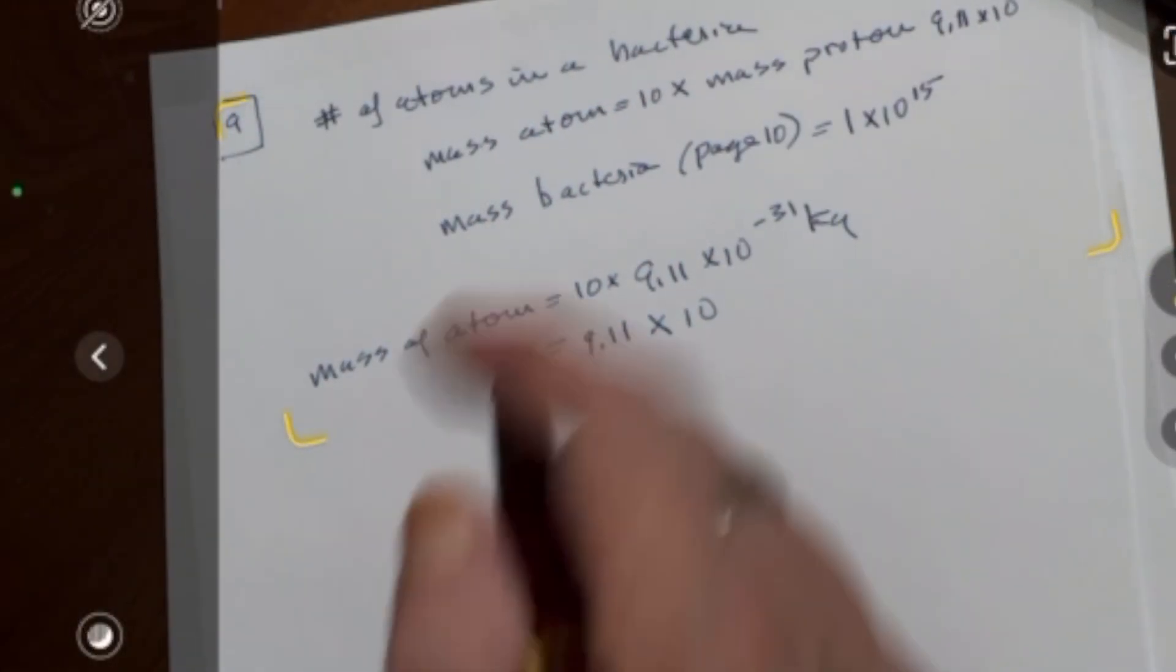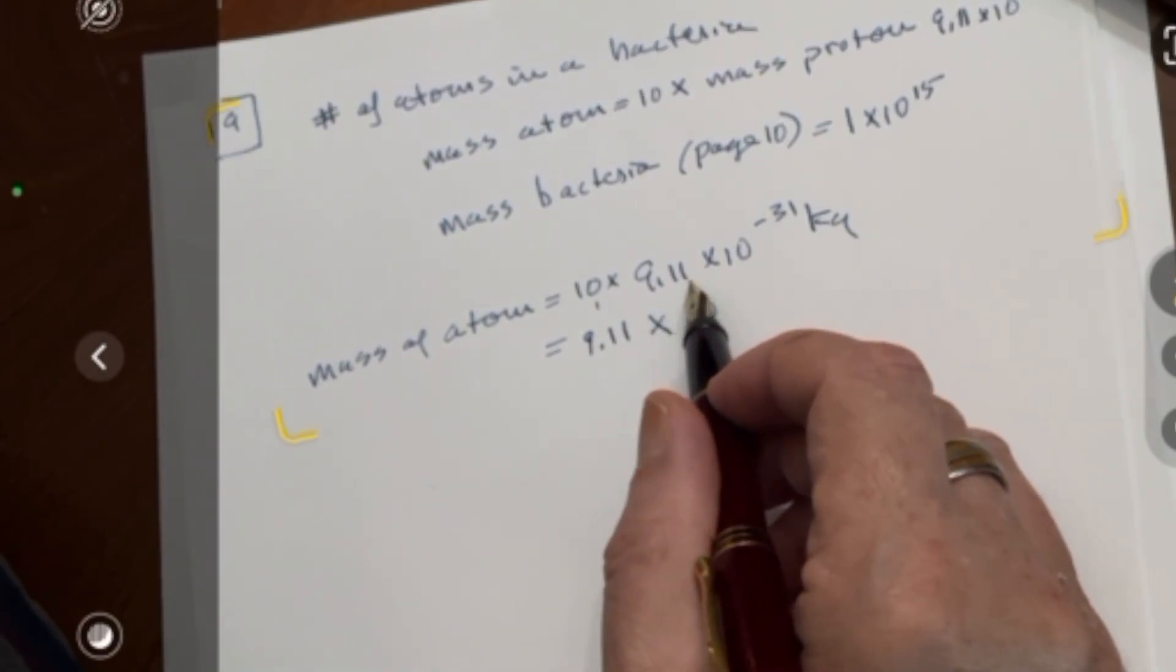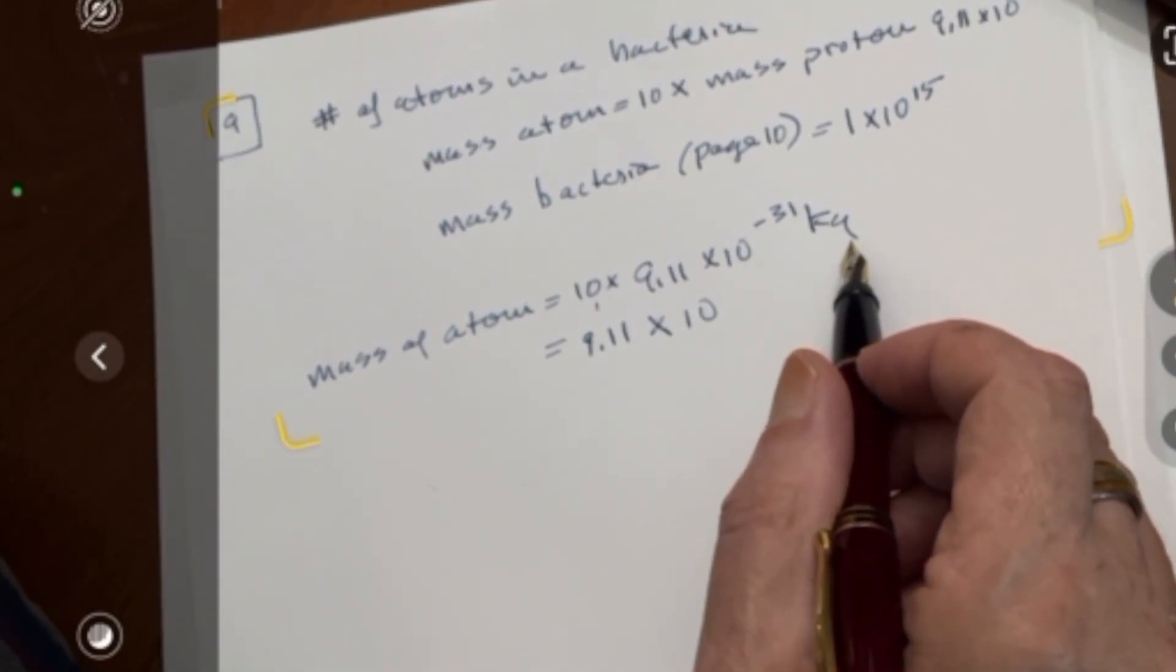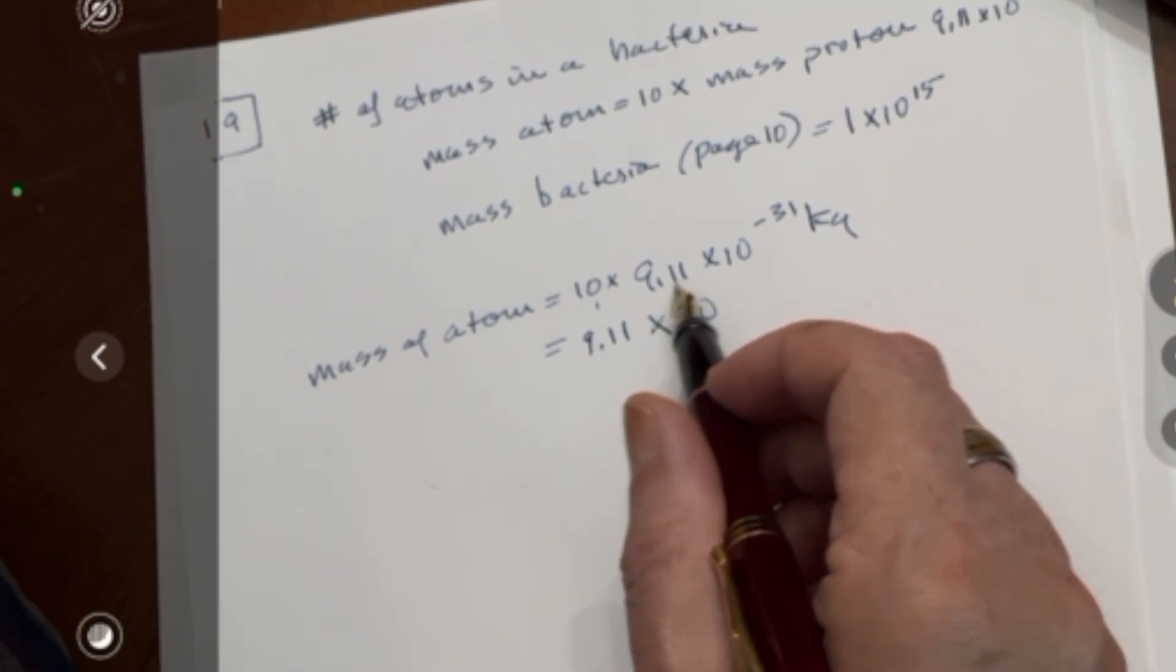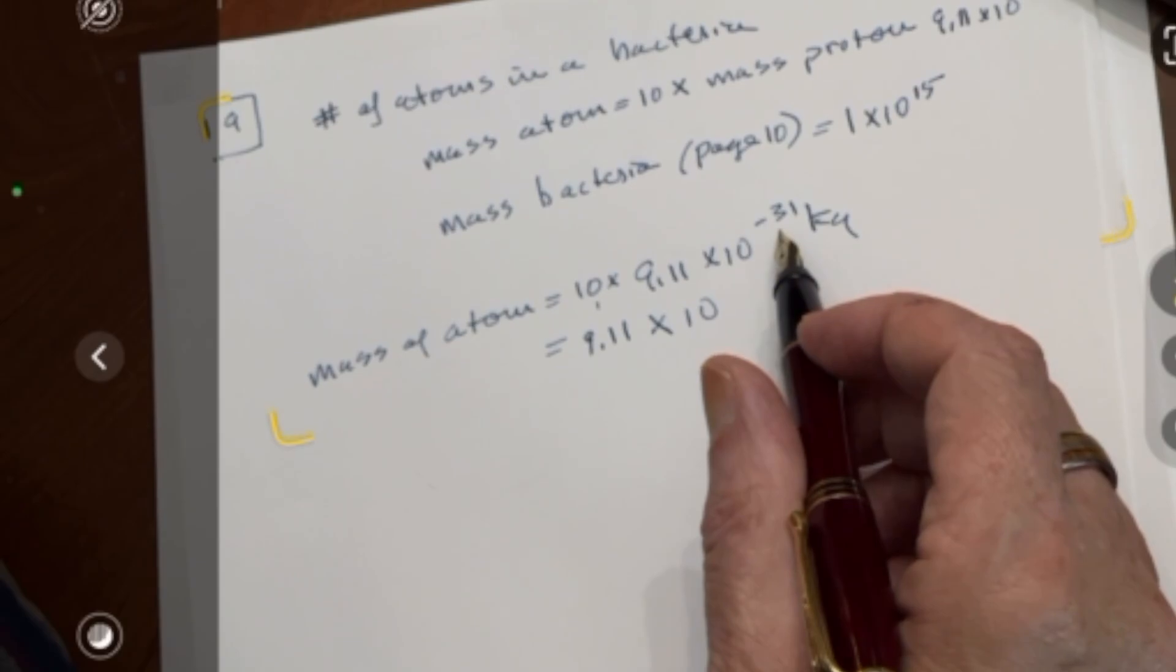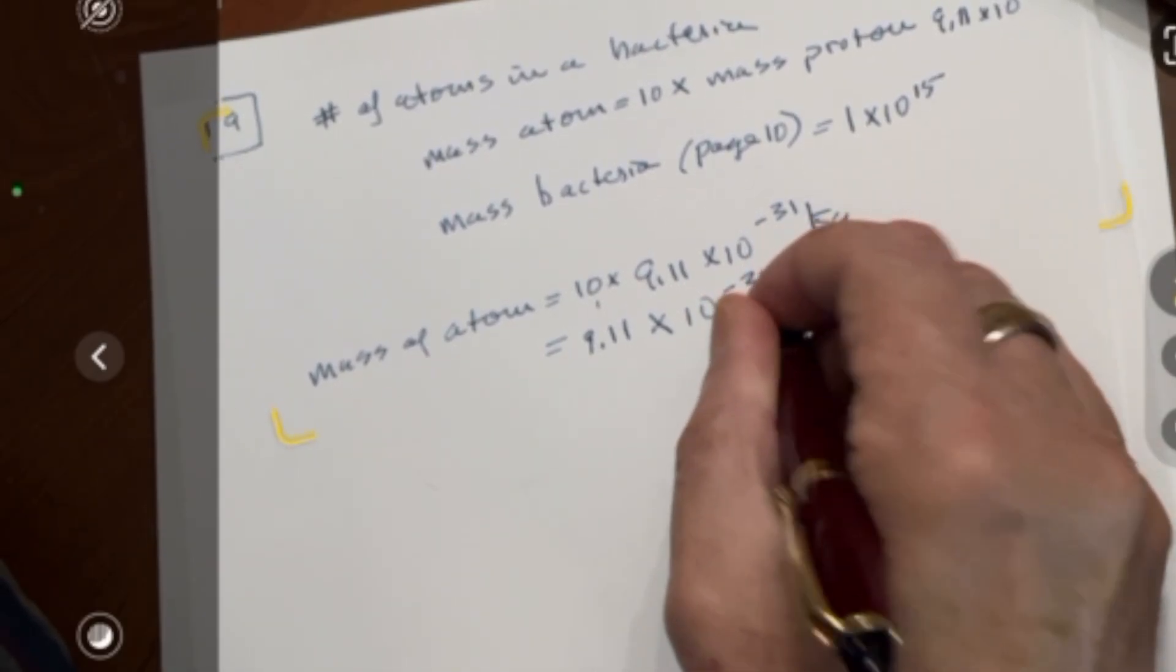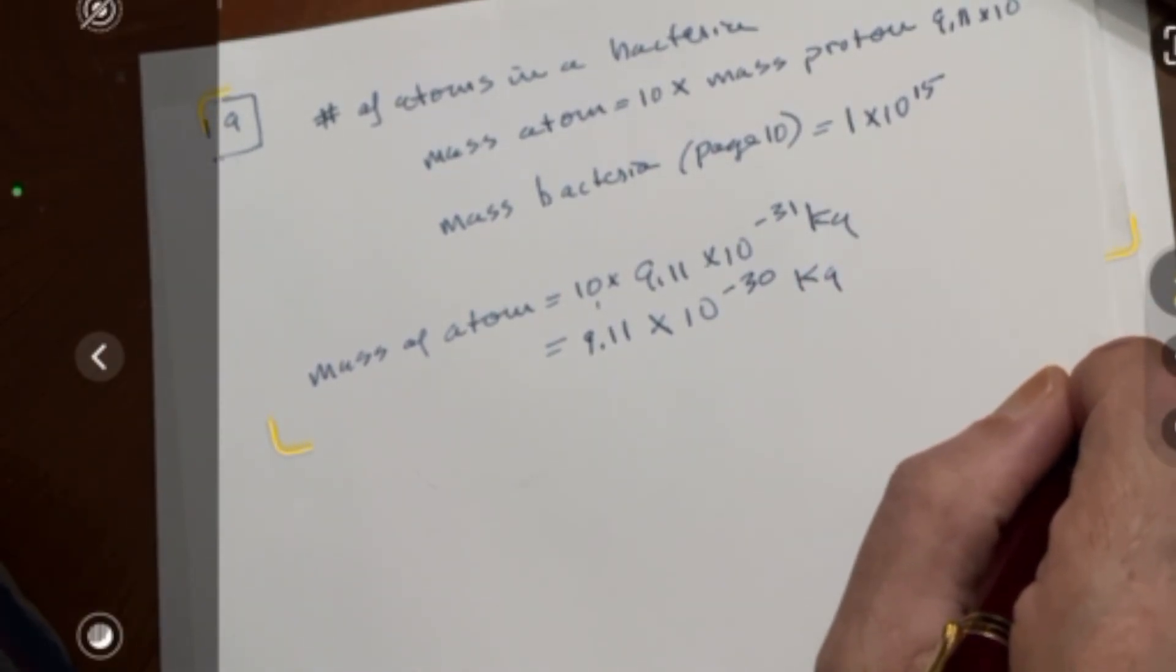So let's just do a little bit of math. What is the mass of an atom? It's 10 times 9.11 times 10 to the negative 31 kilograms. What's that equal? Well, it's quite simply 9.11 times 10 to the what? What's 10 to the negative 31 times 10 to the 1? You add them together. So it's times 10 to the negative 30 kilograms. That's the mass of an atom.